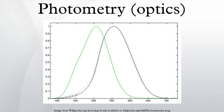Photometry is the science of the measurement of light in terms of its perceived brightness to the human eye. It is distinct from radiometry, which is the science of measurement of radiant energy in terms of absolute power.